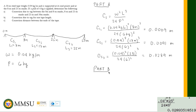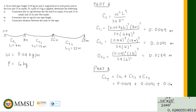For part B, the total correction for the whole tape is the sum of all individual corrections: CS_total = CS1 + CS2 + CS3 = 0.0009 + 0.0091 + 0.0289 = 0.0389 meters.